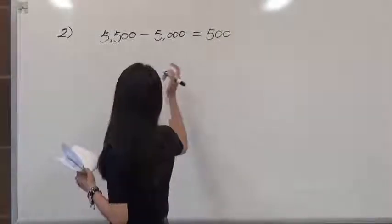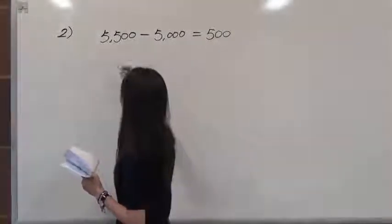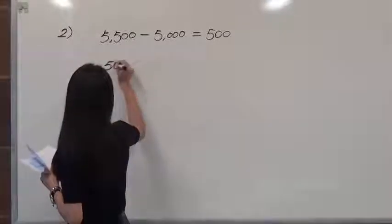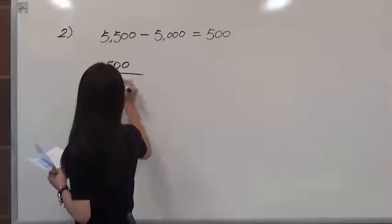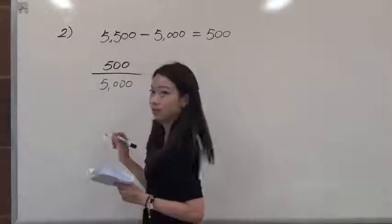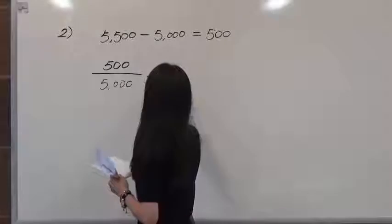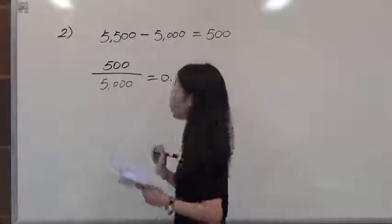And then we have to use the increase number, which is 500, divided by the fall semester, which is 5,000. And we could get the answer of 0.1.